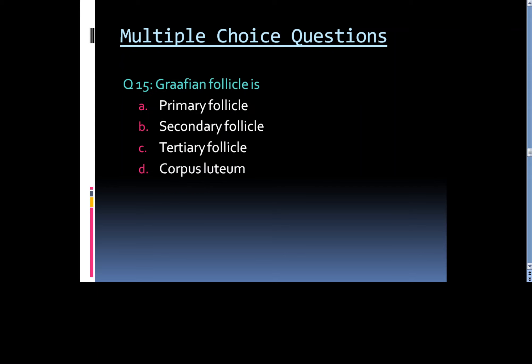Question 15: Graafian follicle is: Option A. Primary follicle, Option B. Secondary follicle, Option C. Tertiary follicle, or Option D. Corpus luteum.